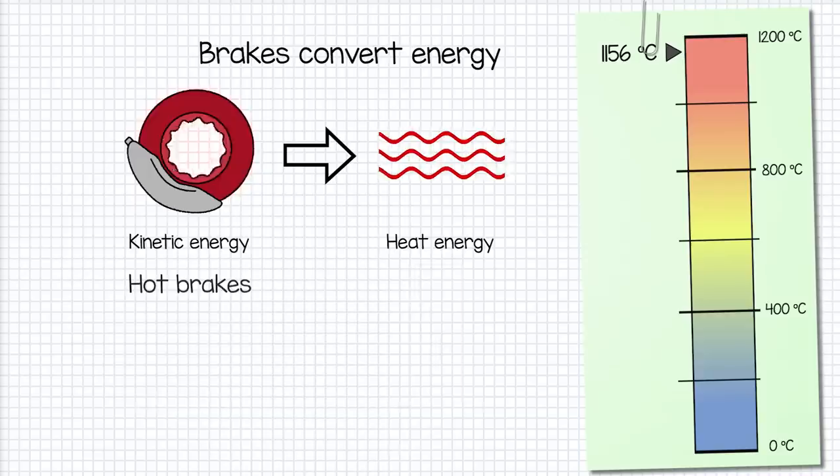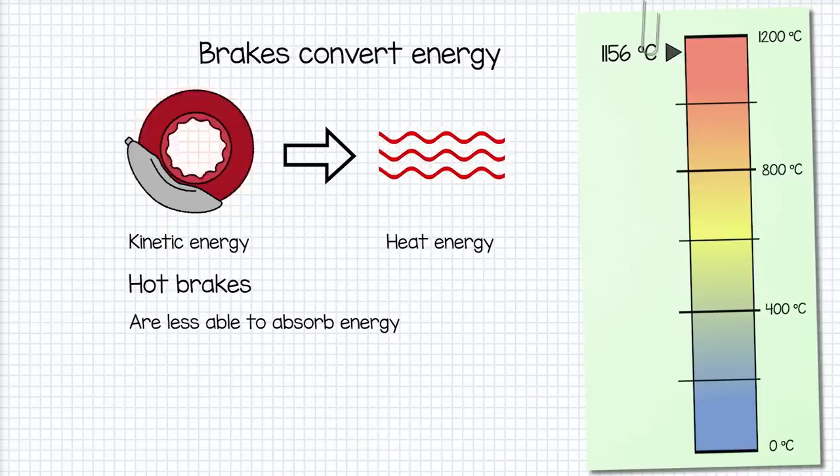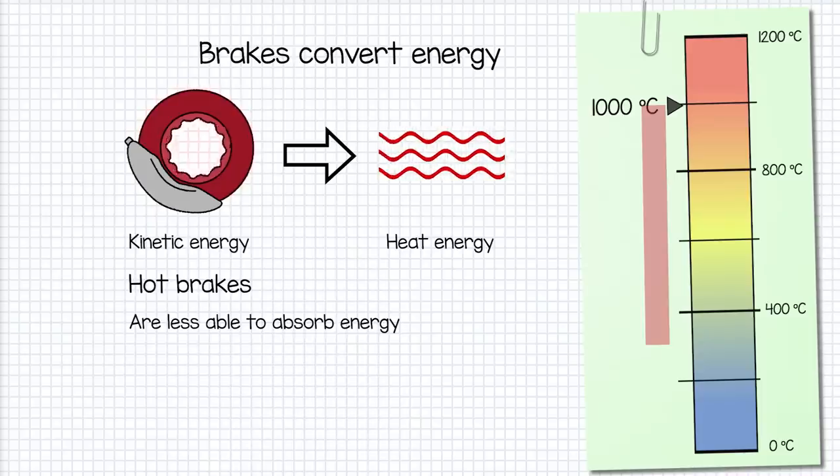Brakes being overly hot causes two real problems. One, if the brake is already hot, then it has less ability to absorb heat and therefore take energy from the wheels. If under braking the brake disc can rise from 300 to 1000 degrees, it's acting as much more of an energy pump than if it could only move from 800 to 1000 degrees Celsius.